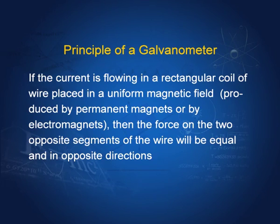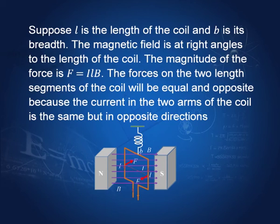One of the instruments you must have used in the laboratory very often is a galvanometer — a moving coil galvanometer. We will now discuss its structure. The principle is: we suspend a coil in a magnetic field. The coil carries current in opposite directions on its two sides, so there are forces that constitute a couple, tending to rotate the coil. This is opposed by the suspension, and when the two balance, you get the relation between the current and the deflection.